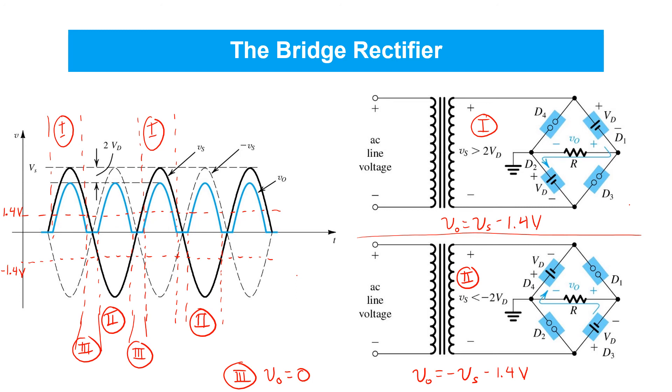Clearly, the bridge rectifier is a full wave rectifier. But, instead of losing just one diode drop, the bridge rectifier loses two diode forward voltage drops because when conducting, there's two diodes in series with a load resistor R.